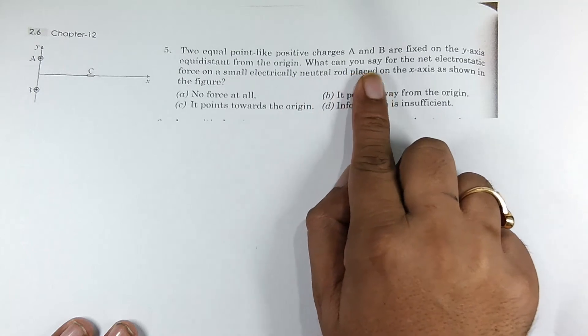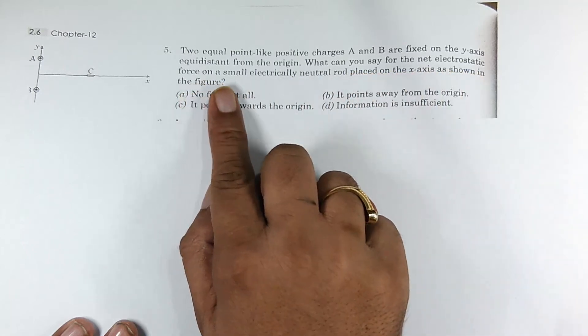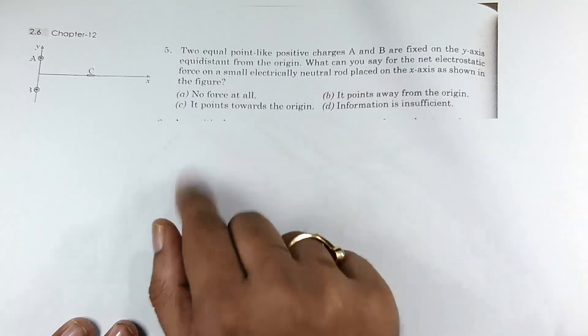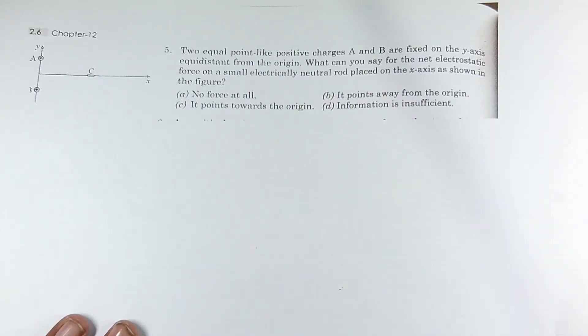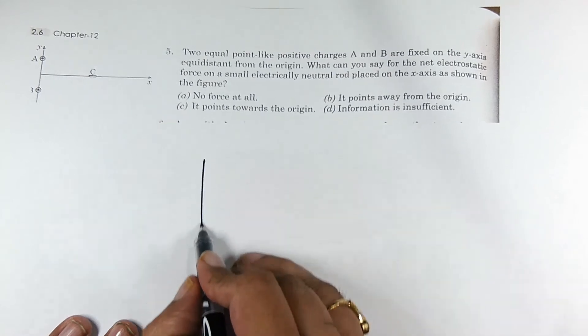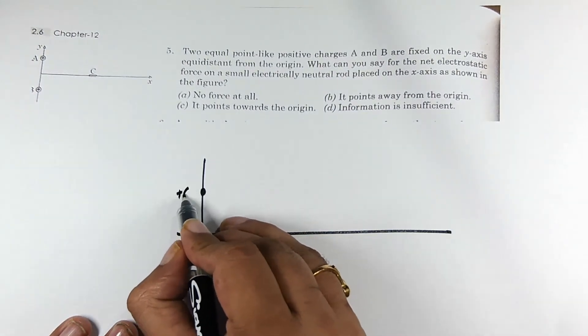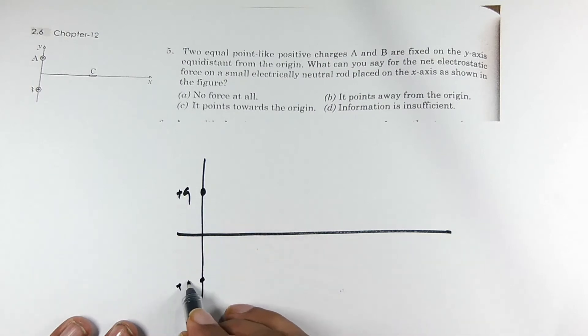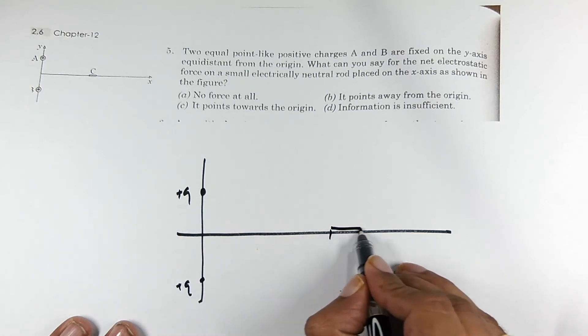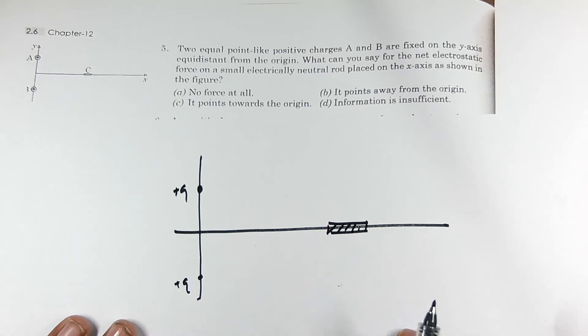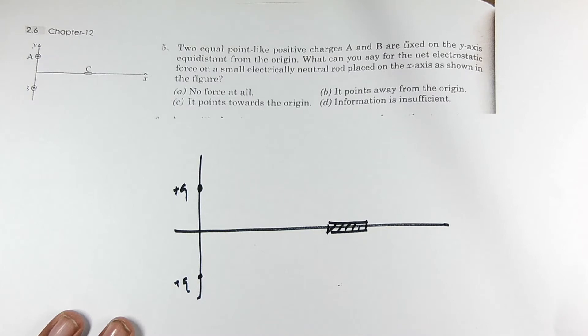What can you say for the net electric force on a small electrically neutral rod placed on the x-axis as shown in the figure? Situation kuch aisi hai ki one positive charge is here, one positive charge is here, and this electrically neutral small segment, a rod, is placed here.